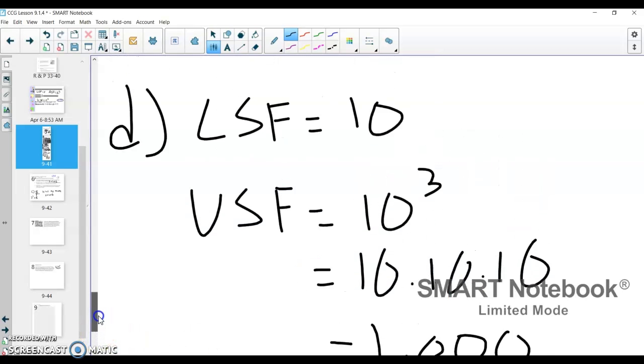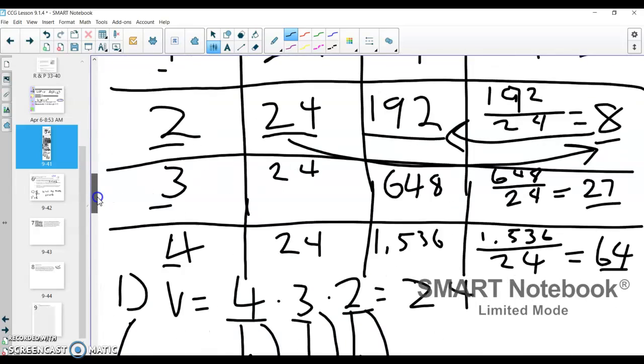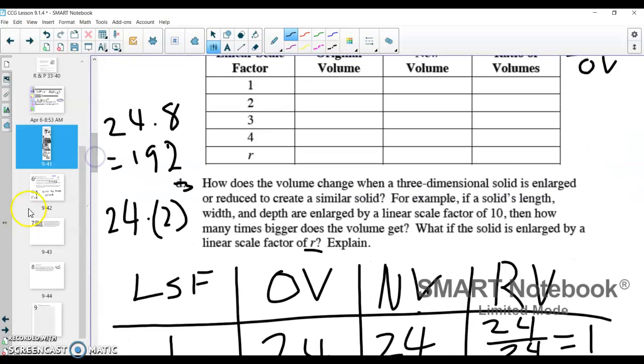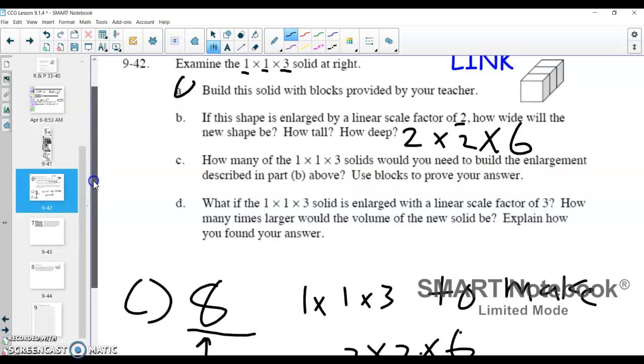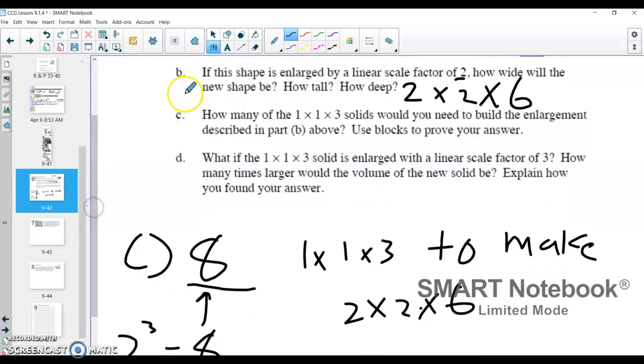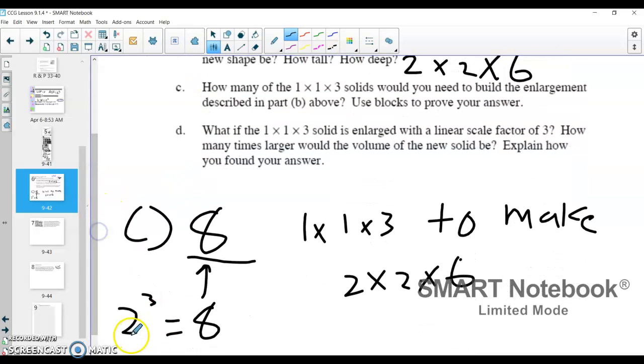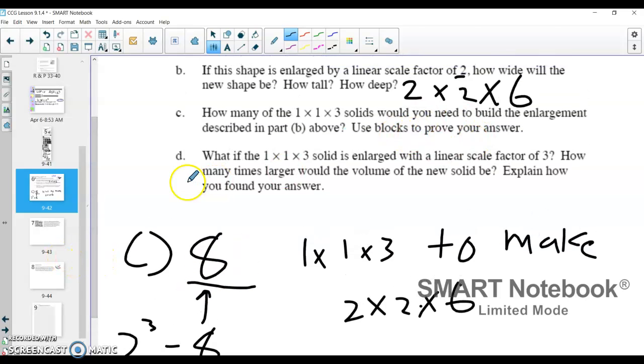But it's just, I just wanted to come back to that for a second to reinforce this idea that we just cube our linear scale factor. And it just reminded me because we see that here, our linear scale factor in part B was two. We cube it to get eight, and eight is what we see. That's the number of blocks it takes to actually make that enlarged shape.